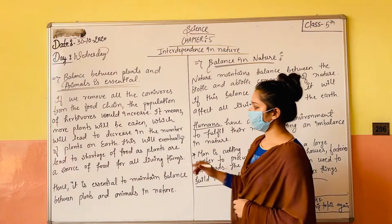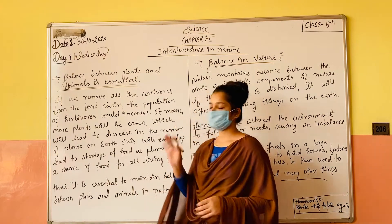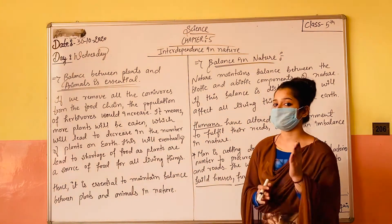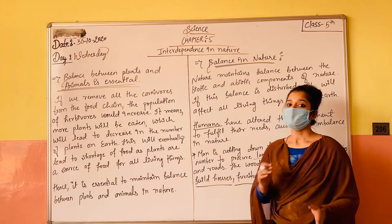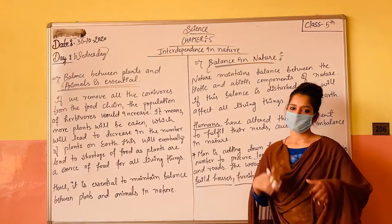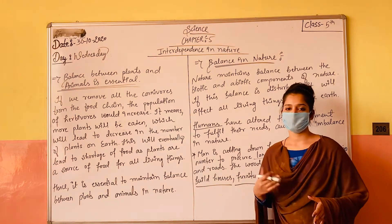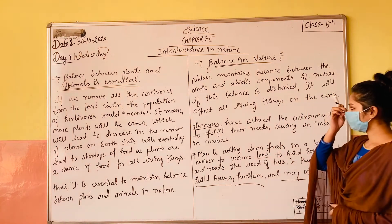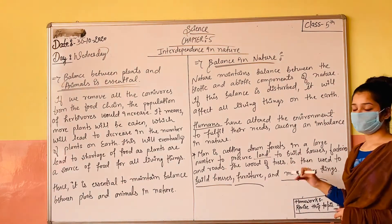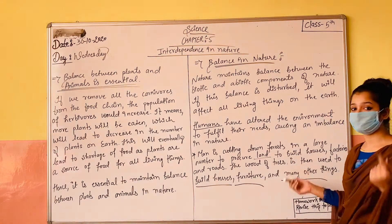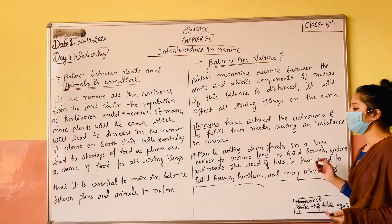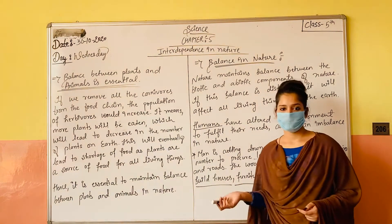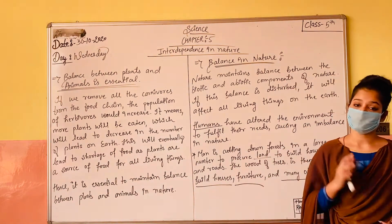I hope you understand why plants and animals need to be balanced. Because if one thing is less, then everyone has a problem. So, why do we need to maintain balance in nature? In the next class, we will learn more about how to maintain this balance.